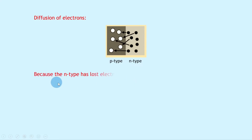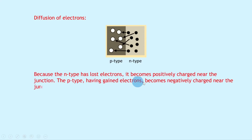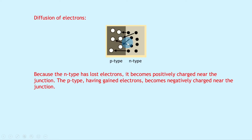We can then say that because the N-type has lost electrons, it becomes positively charged near the junction. The P-type, having gained electrons, becomes negatively charged near the junction. So at the junction between the P-type and N-type material, on the right-hand side within the N-type, it becomes positively charged because it has lost electrons — losing a negative charge is the same as gaining a positive charge. And on the left-hand side of the junction, we've got more negative charge, so this part near the junction becomes negatively charged.